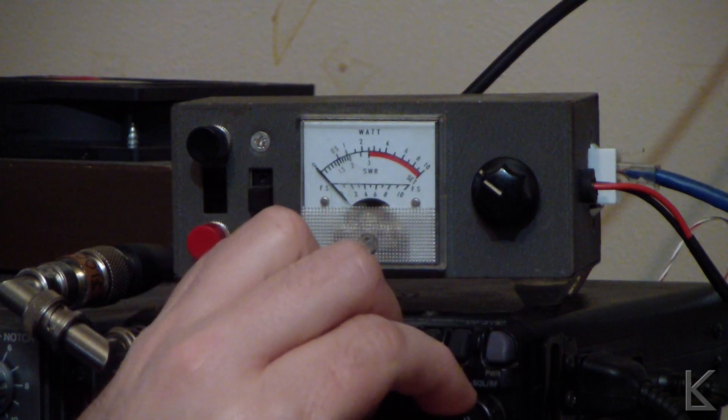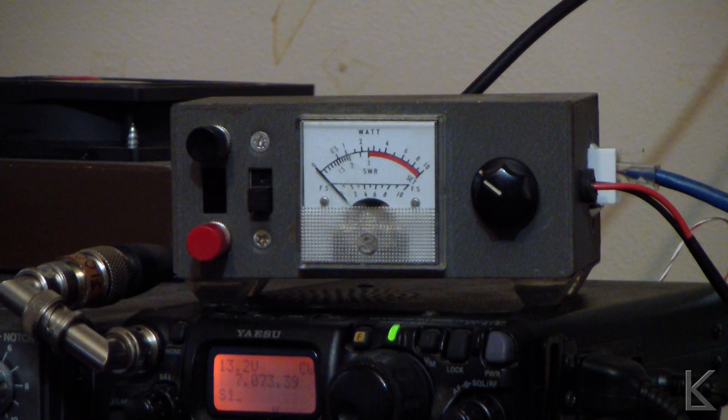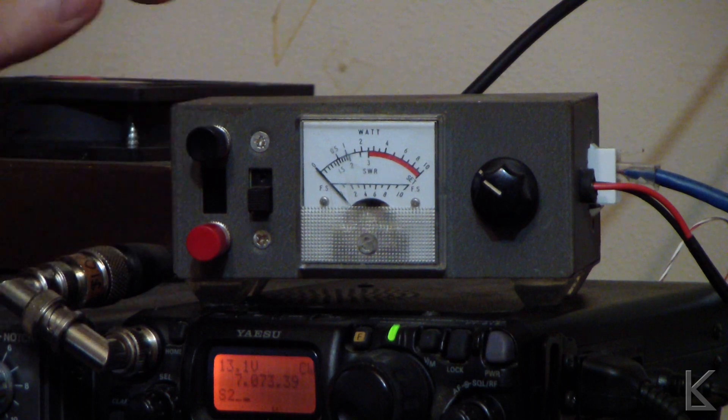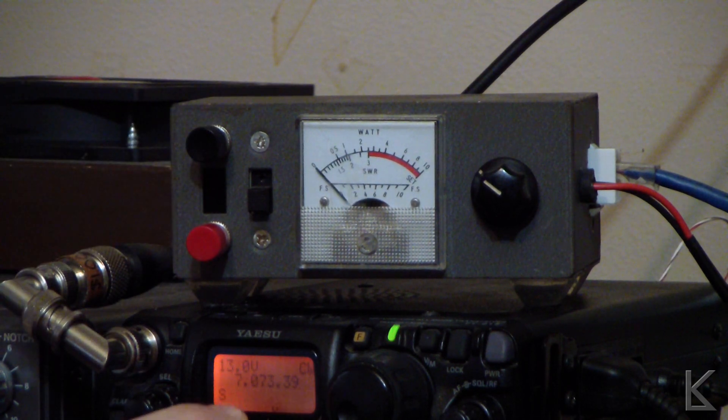So, you can see that even though the SWR indicator on the ASU was showing that I was matched, I was still able to squeeze a little bit more out of that. So, let's detune it a bit and we'll do this again. Okay. So, now you can see I moved it a bit and I've got some SWR indicating on the ASU. Right?